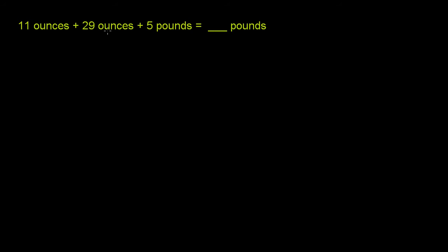We have 11 ounces plus 29 ounces plus 5 pounds equals how many pounds? So we need to add these three quantities. They want us to give the answer in pounds, and we can only add quantities that have the same unit.